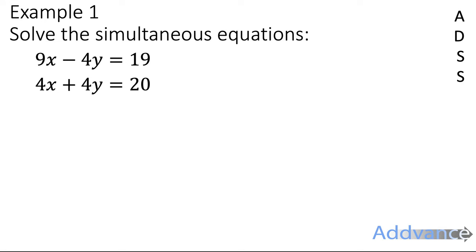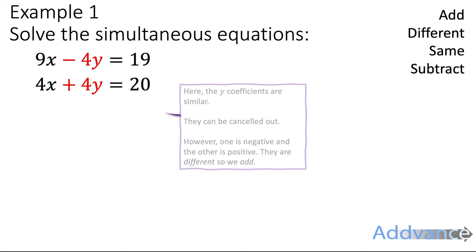And what we're going to do is we're going to cancel out the y's because they are both 4y and 4y. But one is negative and the other is positive. So to cancel them out we have to add. We remember this: add if they're different, same subtract. Add if they're different, same subtract. They are different - one is positive, one is negative. So we're going to add. Okay, so let's add the two equations.